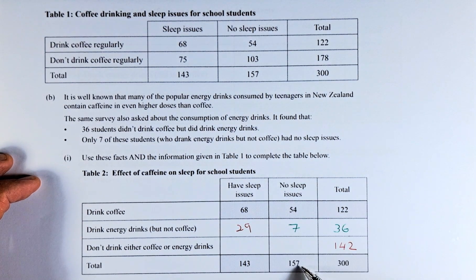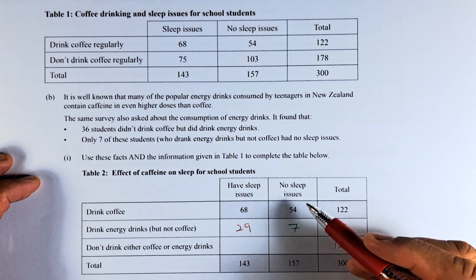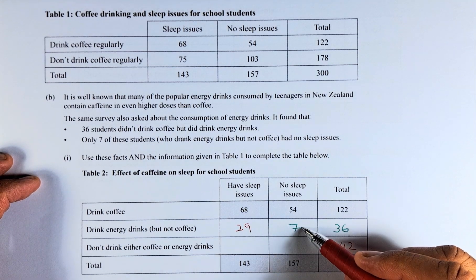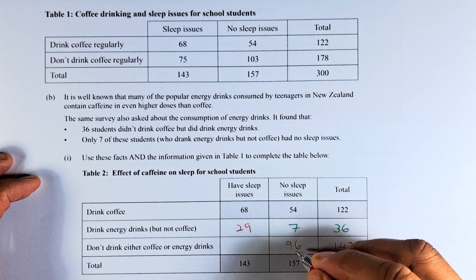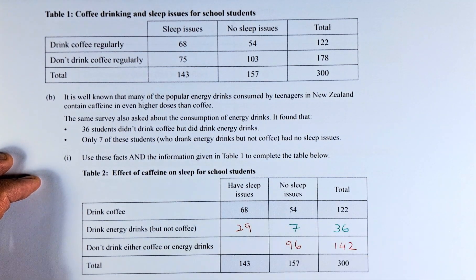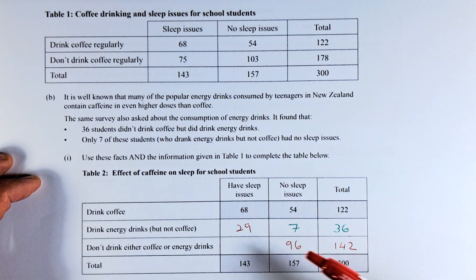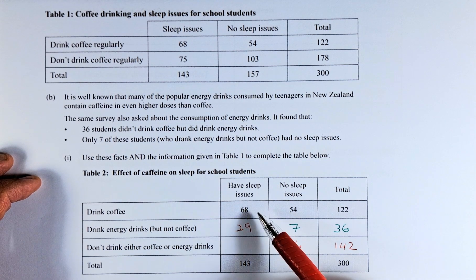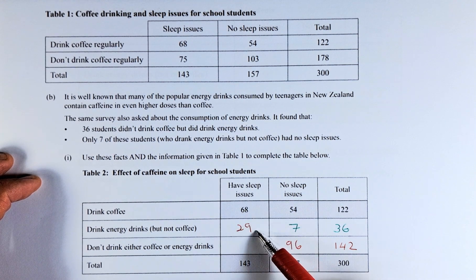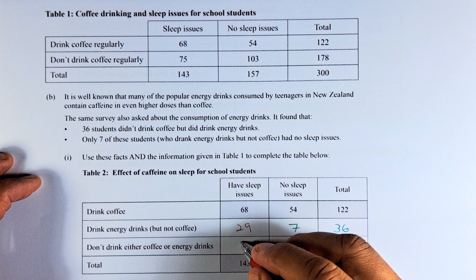Next, we take 157 as the total, minus 54 minus 7, which gives us 96. To calculate the remaining box, we use the column total as we have done before: 143 minus 68 minus 29, and that gives us 46.